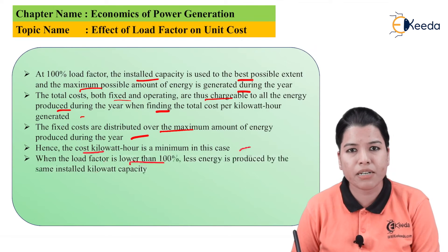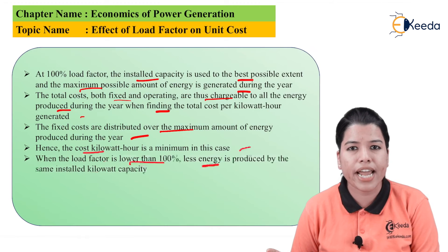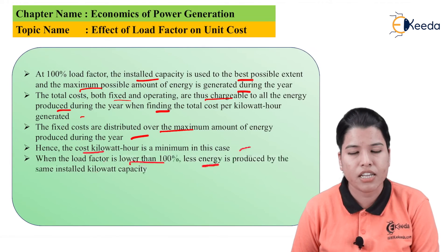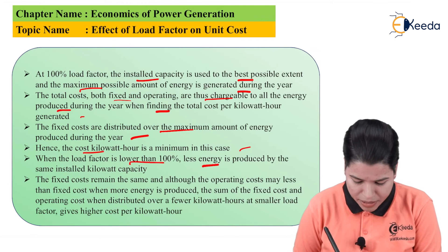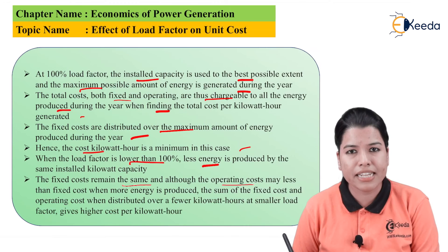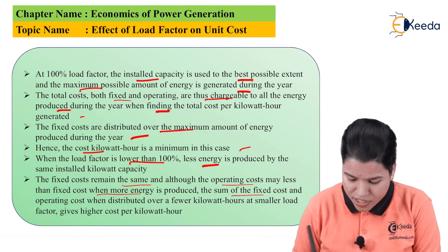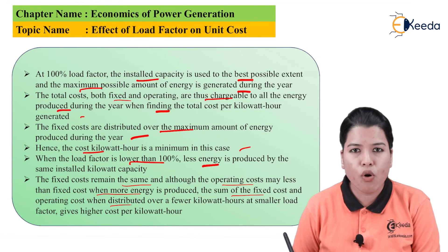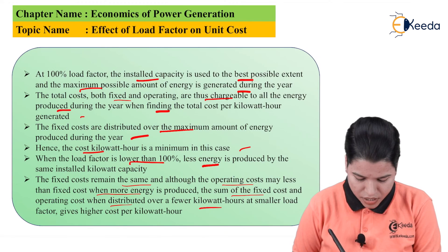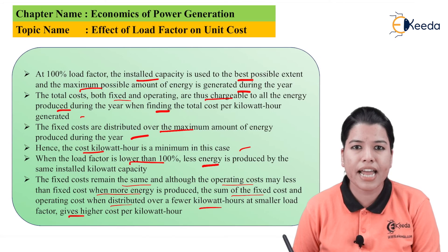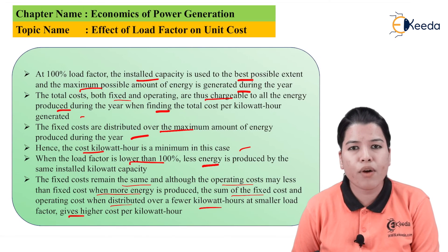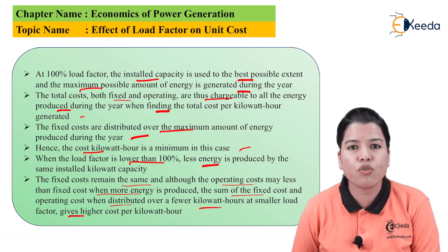Now when the load factor is lower than 100%, then less energy is produced by the same installed capacity of the plant. So as the load factor goes on decreasing, the energy which can be produced by the plant also goes on decreasing, but the cost required to produce that amount of energy goes on increasing. Fixed cost remains the same, although the operating cost may be less. Also the sum of the fixed cost and the operating cost, when distributed over the fewer kilowatt-hours, gives a higher cost per kilowatt-hour. So we can say that as the load factor goes on decreasing, the cost per kilowatt-hour goes on increasing and the generation also goes on decreasing. This is the effect of load factor on the cost of electricity.